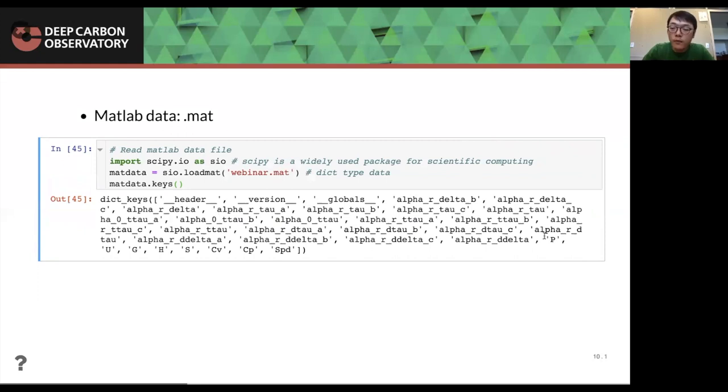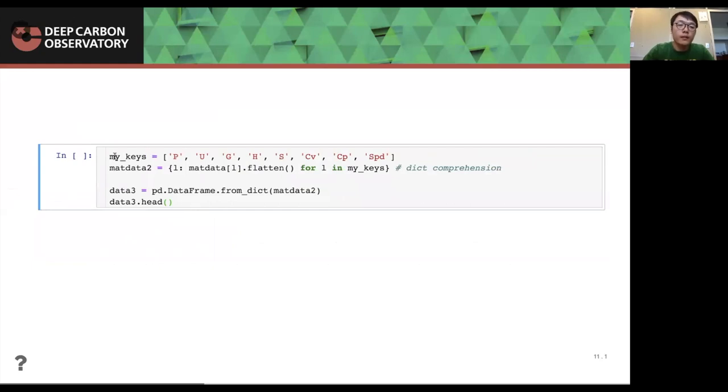And the one we are interested in are like the last one, the pressure, like internal energy gives free energy and stuff. This is the one I've been working on previously. And in order to change this dictator, dictionary into a pandas data frame, we need to run this. So first, we will take the entry, the variables that's of our interest,